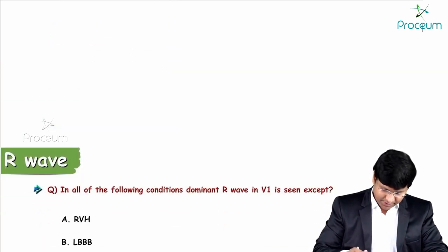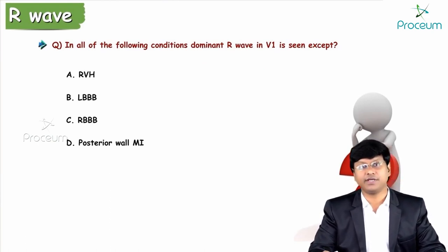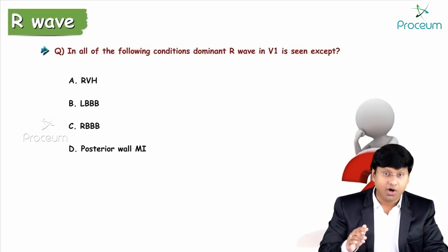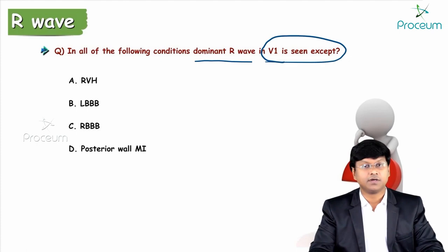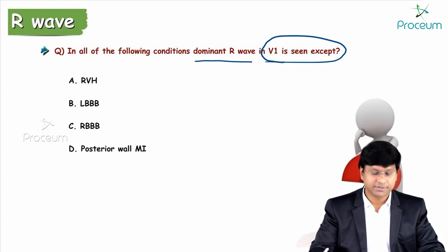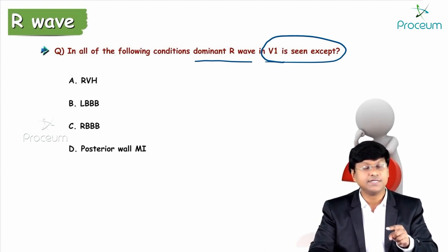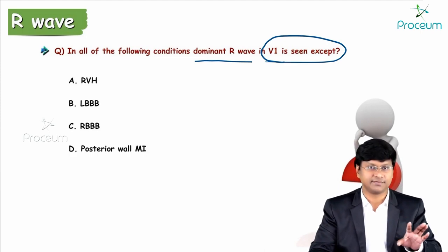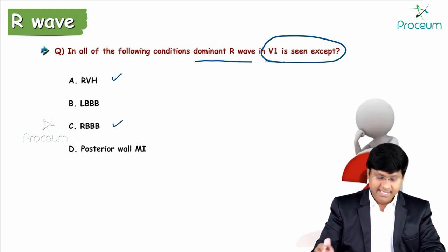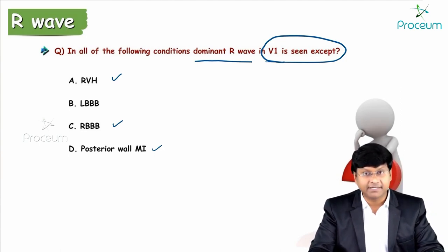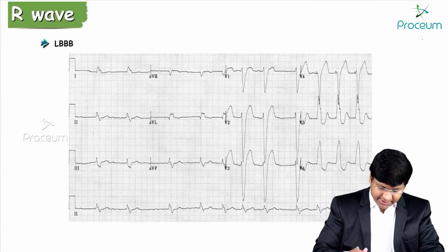MCQ: In all of the following conditions dominant R wave in V1 is seen EXCEPT — right ventricular hypertrophy, left bundle branch block, right bundle branch block, and posterior wall MI. The answer is left bundle branch block. Dominant R wave in V1 is seen in right ventricular hypertrophy, right bundle branch block, and posterior wall MI, but NOT in left bundle branch block.